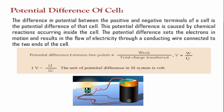The difference in potential between the positive and negative terminals of a cell is called the potential difference of that cell. For example, the batteries we use in remote controls are normally 1.5 volt batteries, and larger ones are 9 volt batteries available at electronics shops. Volt is the unit used to measure potential difference.